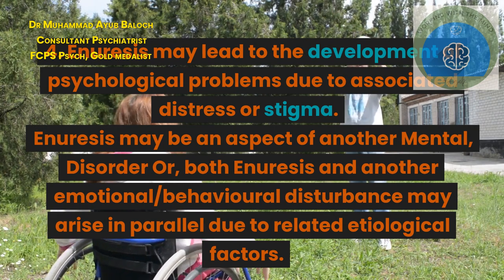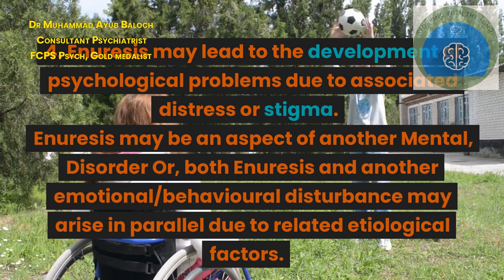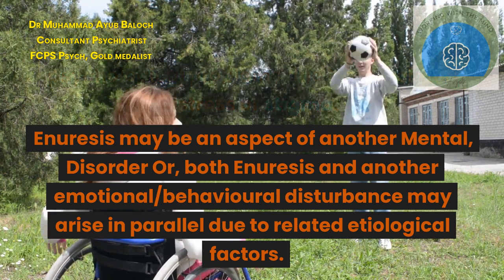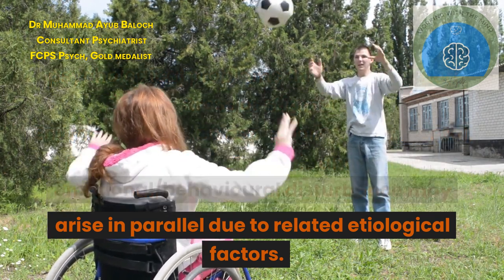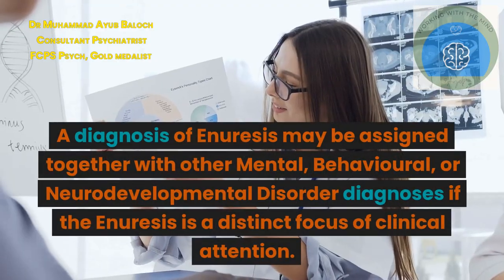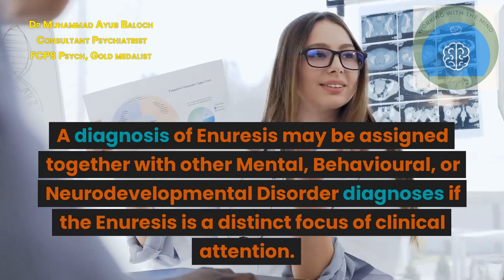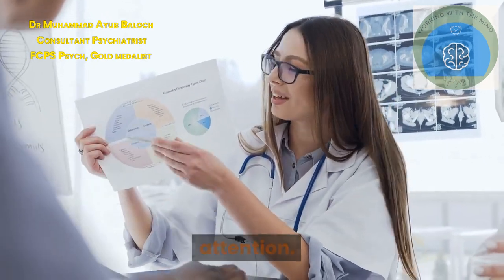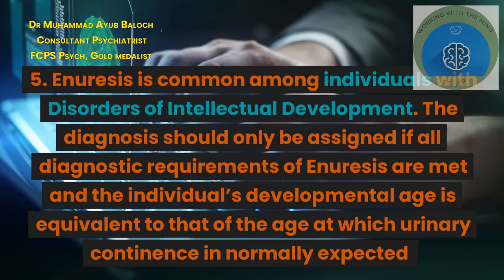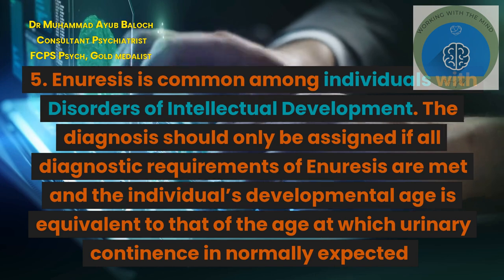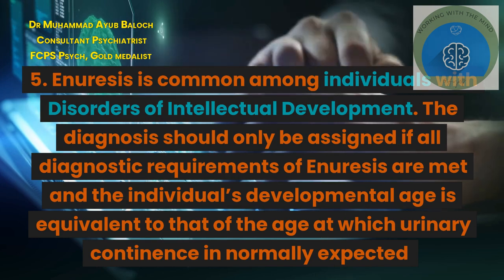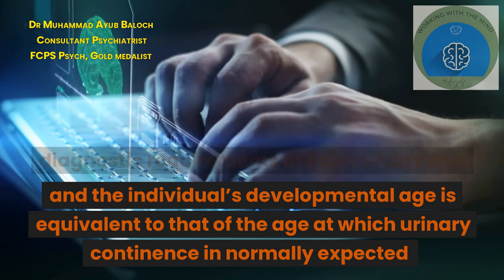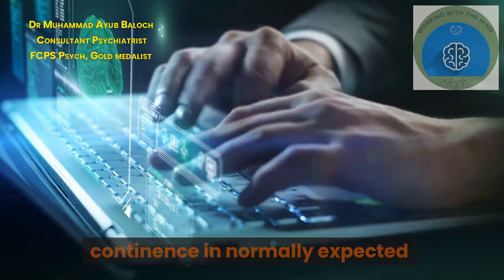Enuresis may lead to psychological problems due to associated distress or stigma. Enuresis may be an aspect of another mental disorder, or both enuresis and another emotional or behavioral disturbance may arise in parallel due to related etiological factors. A diagnosis of enuresis may be assigned together with other mental, behavioral, or neurodevelopmental disorder diagnoses if enuresis is a distinct focus of clinical attention. Enuresis is common among individuals with disorders of intellectual development; the diagnosis should only be assigned if all diagnostic requirements are met and the individual's developmental age is equivalent to the age at which urinary continence is normally expected.